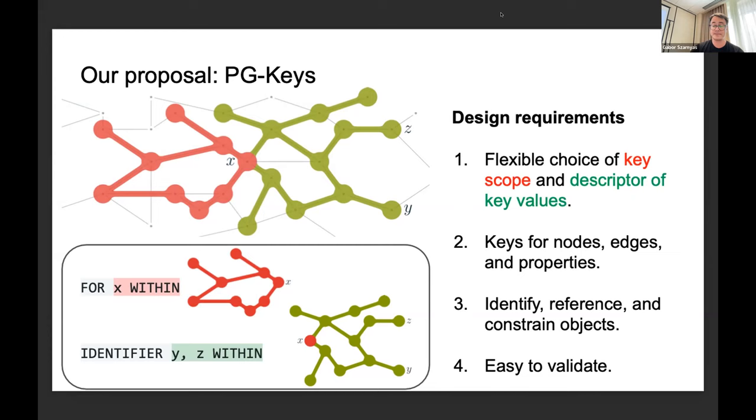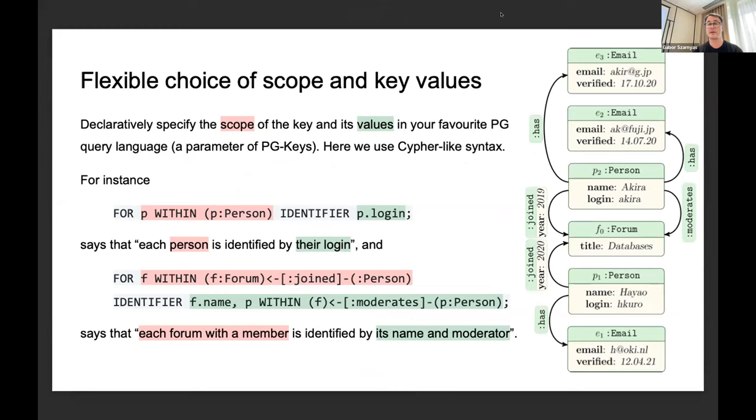Let's take each of these in turn and I'll show how we've been satisfying design requirements. The first on flexible choice of scope and key values: we declaratively specify the scope of the key and its values in your favorite pattern query language. This is a template for specifying concrete key constraints. Here we're just going to use Cypher that we're all familiar with.